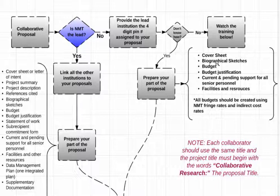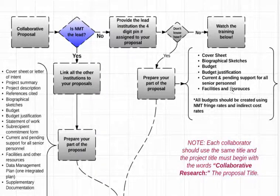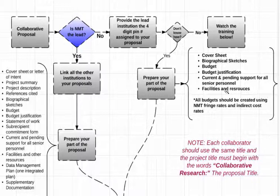Once you've done that, you need to prepare your part of the proposal, which includes a cover sheet, biographical sketches, your budget, and other required parts. All budgets should be created using New Mexico Tech fringe rates and indirect cost rates, since each school may be different. You include everything that concerns New Mexico Tech — the budget, facilities and resources — plus the research sections, and then route it as a normal proposal.